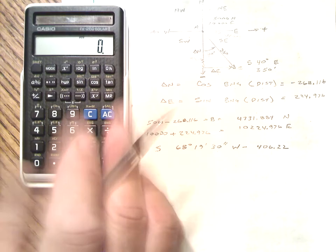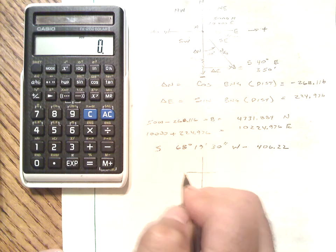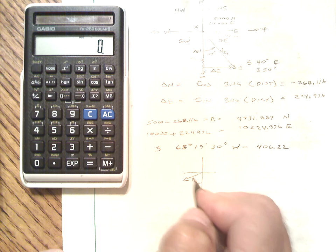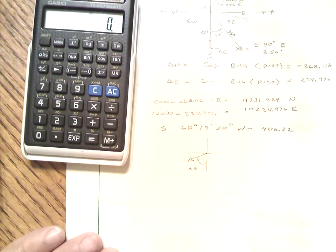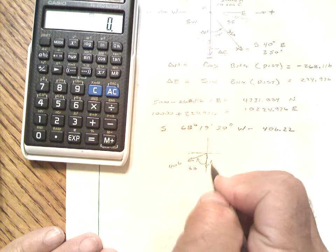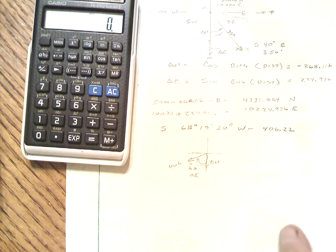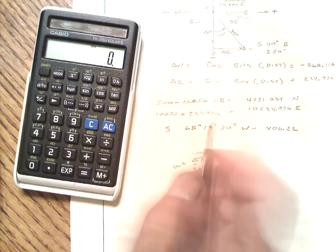So we could, without benefit of the picture, we could just kind of go through it or we could make a quick diagram. Recognizing that that is the 68 degrees and some change in our distance is 406 feet along that. So we're looking literally for, again, the delta north, which is going to be down, and the delta easting is going to be a negative. So both of these are going to be in the negatives.